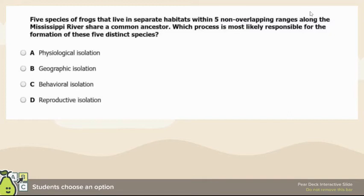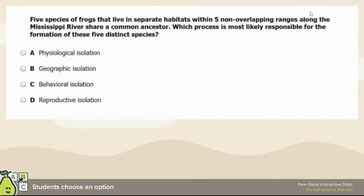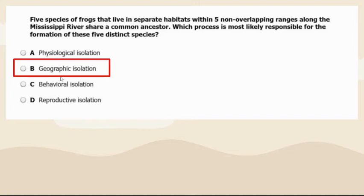Different species of frogs have five non-overlapping ranges. This is classic geographic isolation — if it's the same species living in five separate areas, there must be a reason they cannot breed with each other, whether it's a mountain, river, or lake. They are geographically isolated from one another.